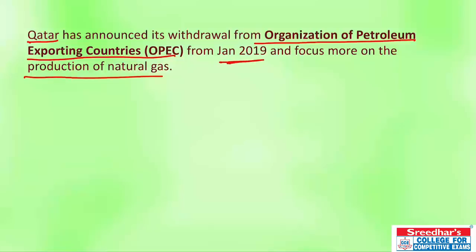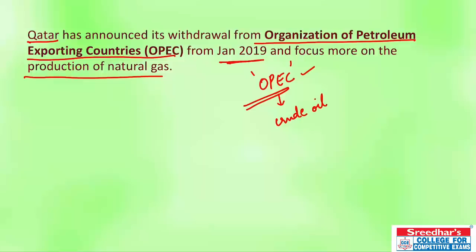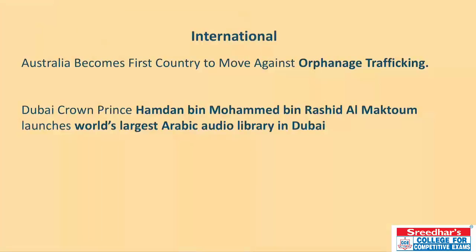Qatar has announced its withdrawal from the Organization of Petroleum Exporting Countries (OPEC) from January 2019 and will focus more on production of natural gas. OPEC is the organization of crude oil exporting countries that decides the price of crude oil. Qatar, a member of OPEC, has now withdrawn and said it will concentrate more on natural gas production.